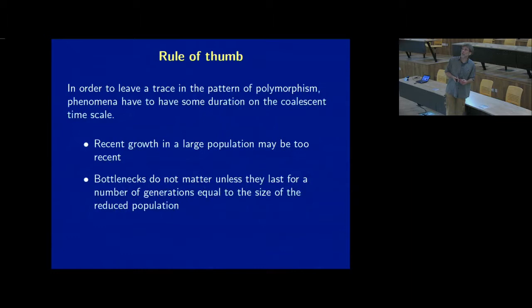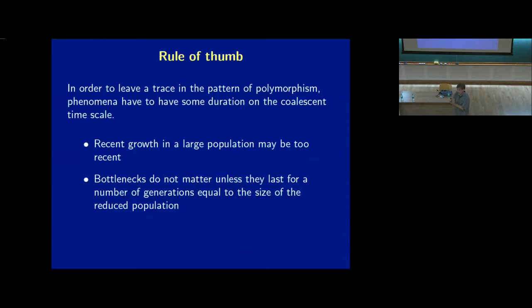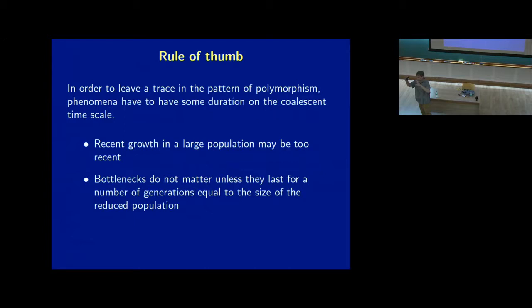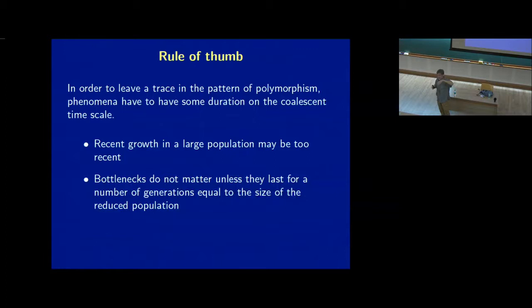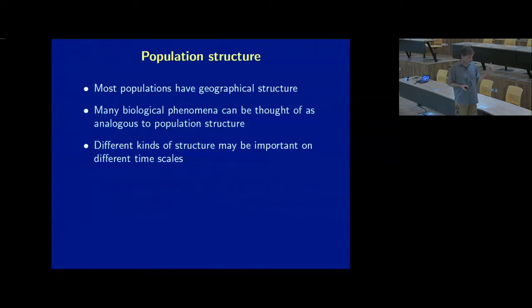Can you detect changes in population size? It depends — changes have to last a long time to have an effect. An instantaneous bottleneck doesn't do much to the pattern of polymorphism; it has to last long enough. Think about the beetles: if you shrink the box very quickly and expand it again nothing happens. But if you shrink to a population of 100 and that lasts for roughly 100 generations — roughly the time scale of drift — then you actually start losing alleles.